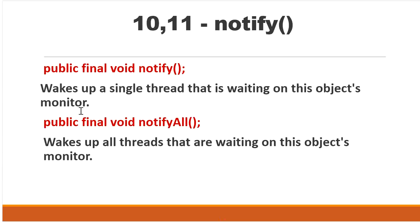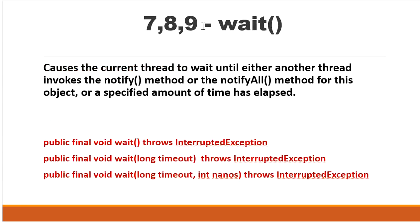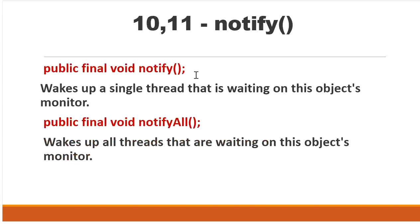So these are the three methods we discussed: wait, notify, and notifyAll. We can use these functions only inside a synchronized area, because on the object on which we are calling wait, notify, and notifyAll, we must first get the lock of that object. Thanks for watching this video.